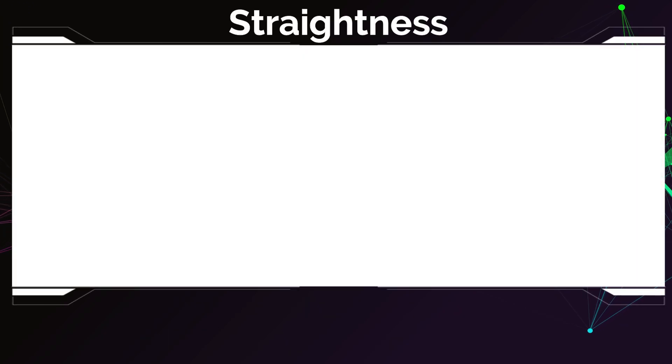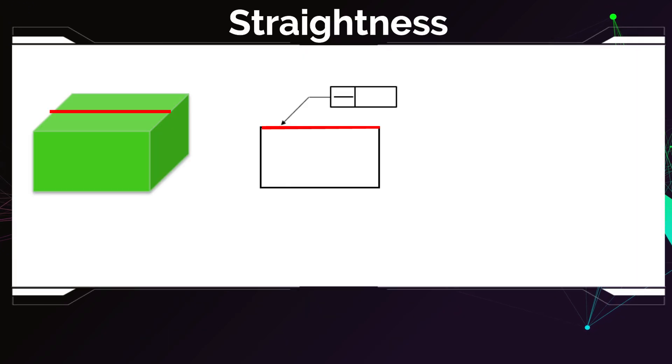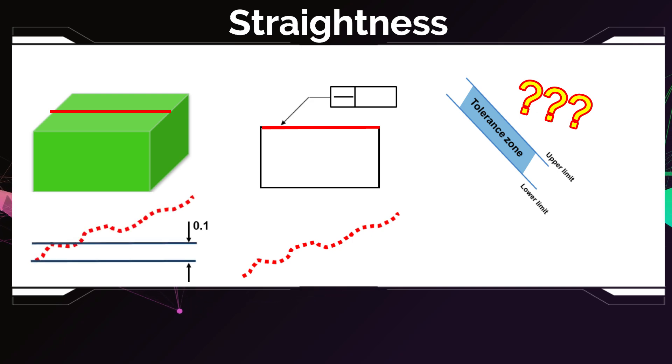But what if I measured and I found out that the line looks like that? See, it has a tendency of an inclination upwards. Where does my tolerance zone for the straightness lie? Is it like that, and this distance has to be 0.1,